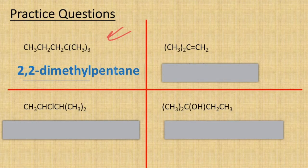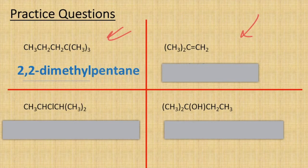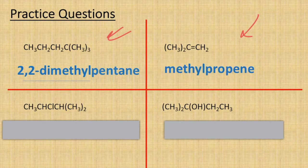For the next one, which is going to be an alkene — in my alkene I've got three carbons so it's going to be propene — and I've got a methyl group coming off the second one, so it's going to be methylpropene.